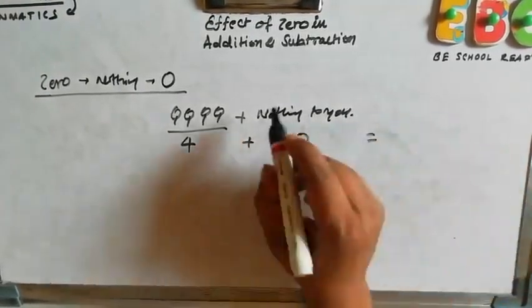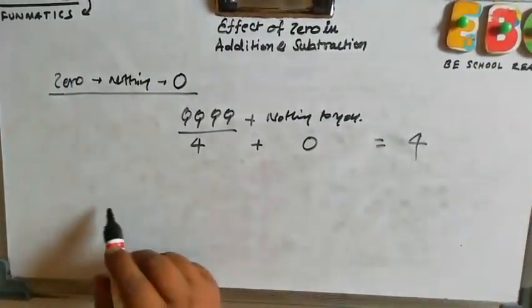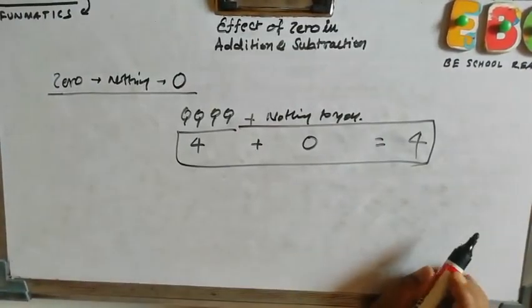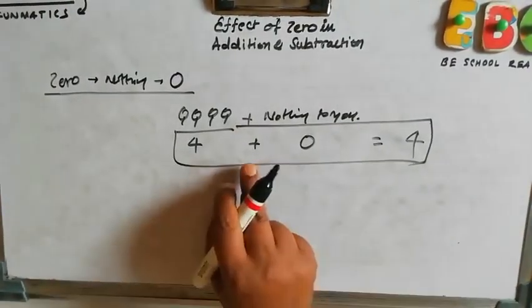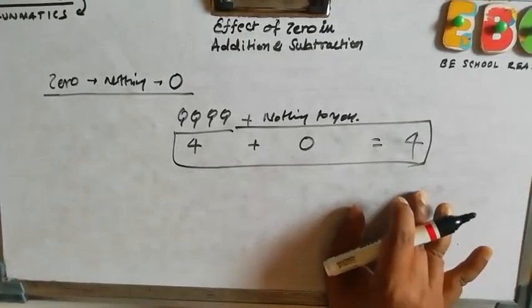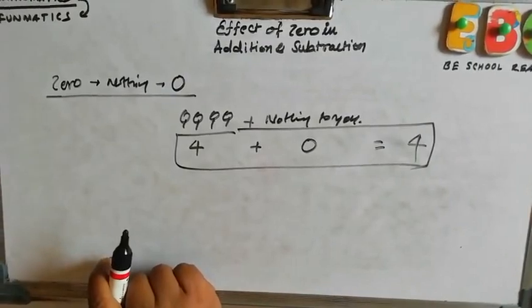So, how many lollipop you have right now? This is four. So, what we see is adding zero to the number will not change the number. It will remain the same.